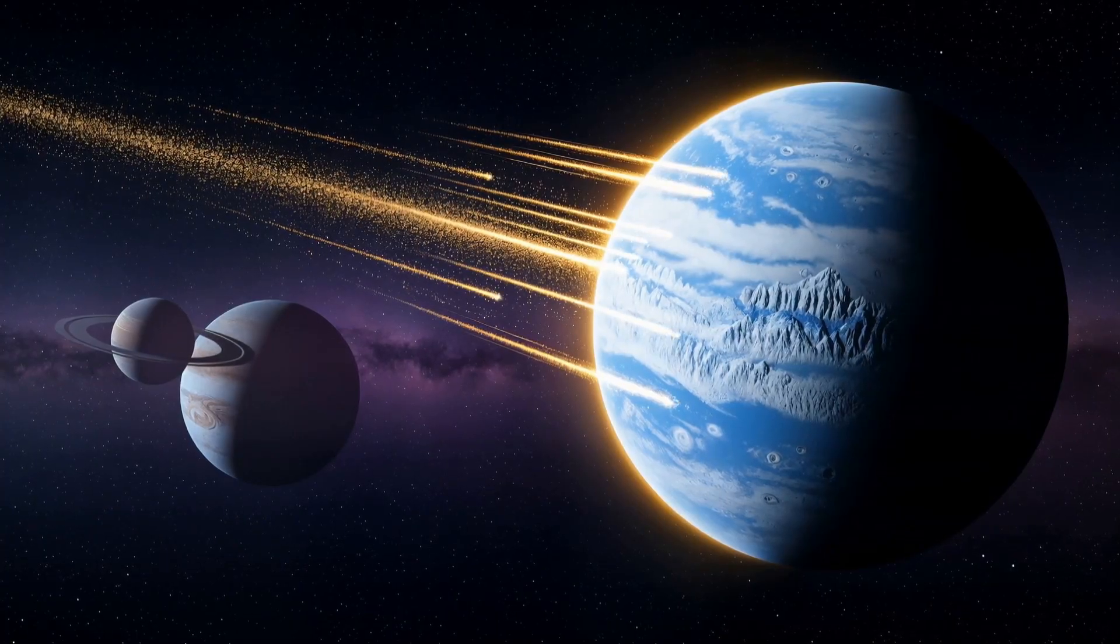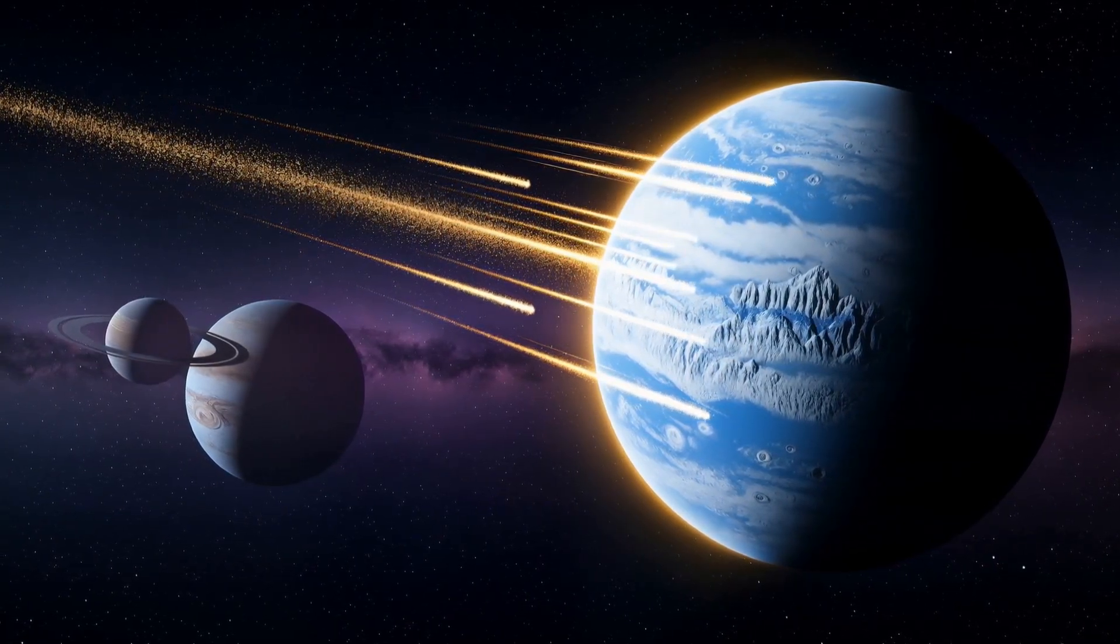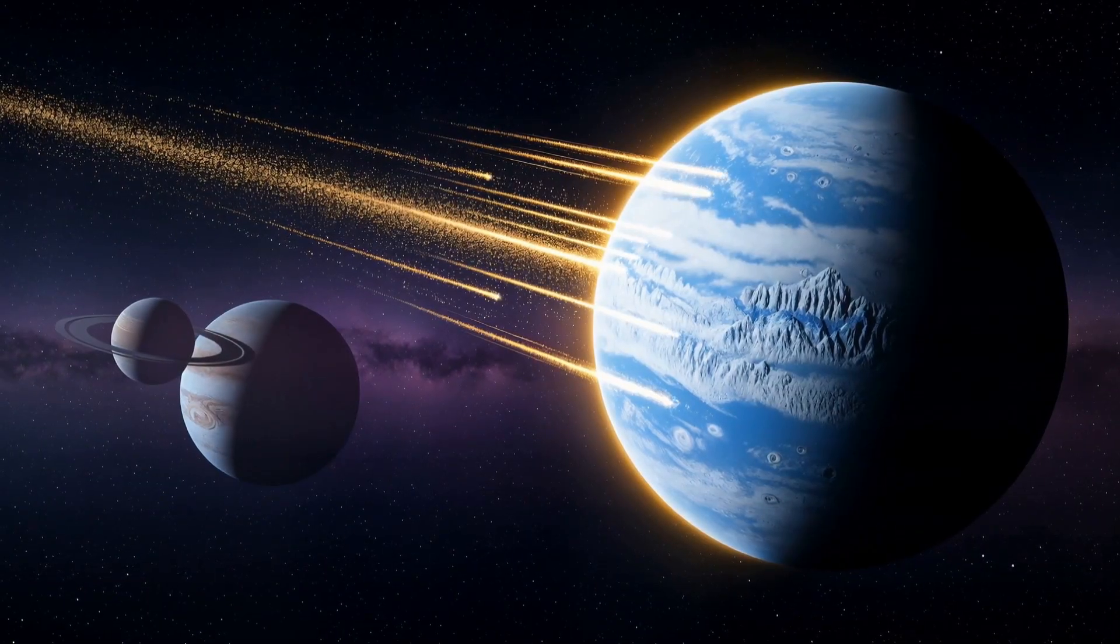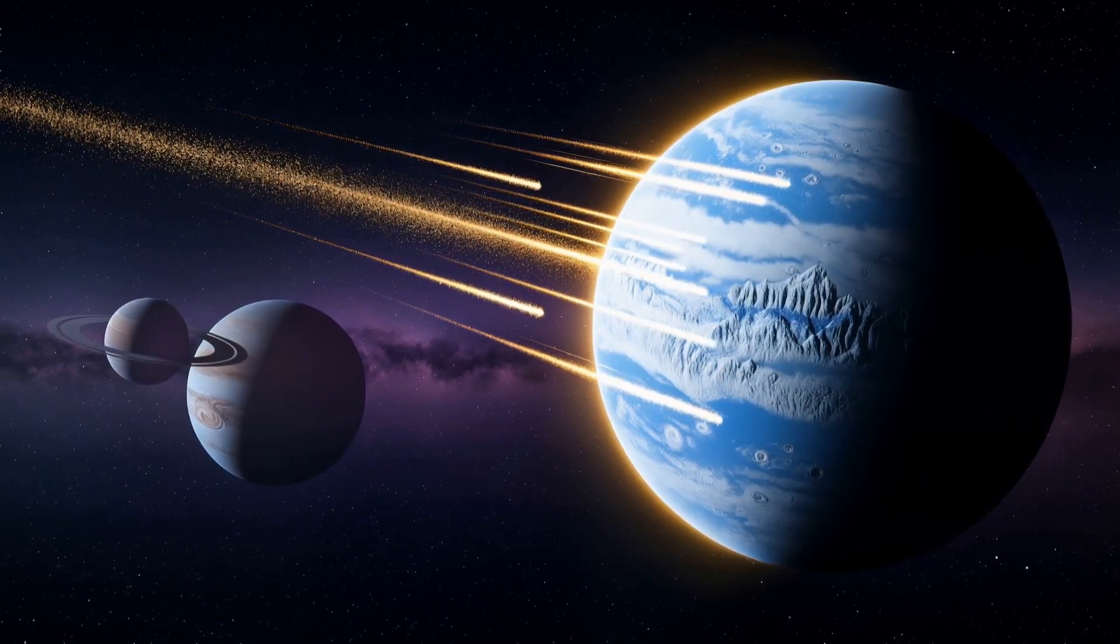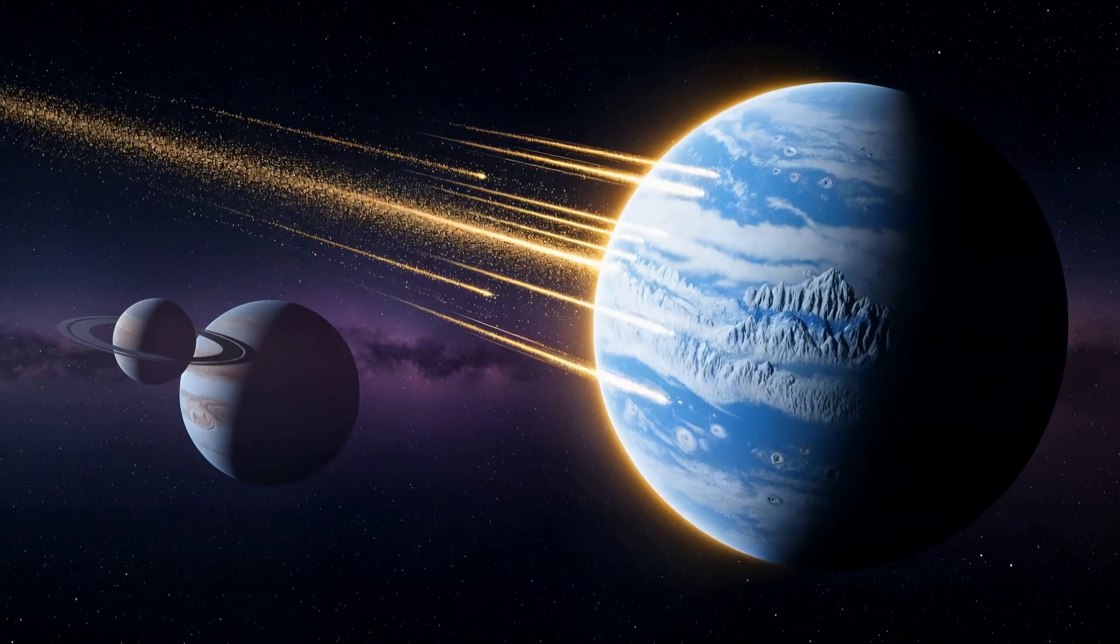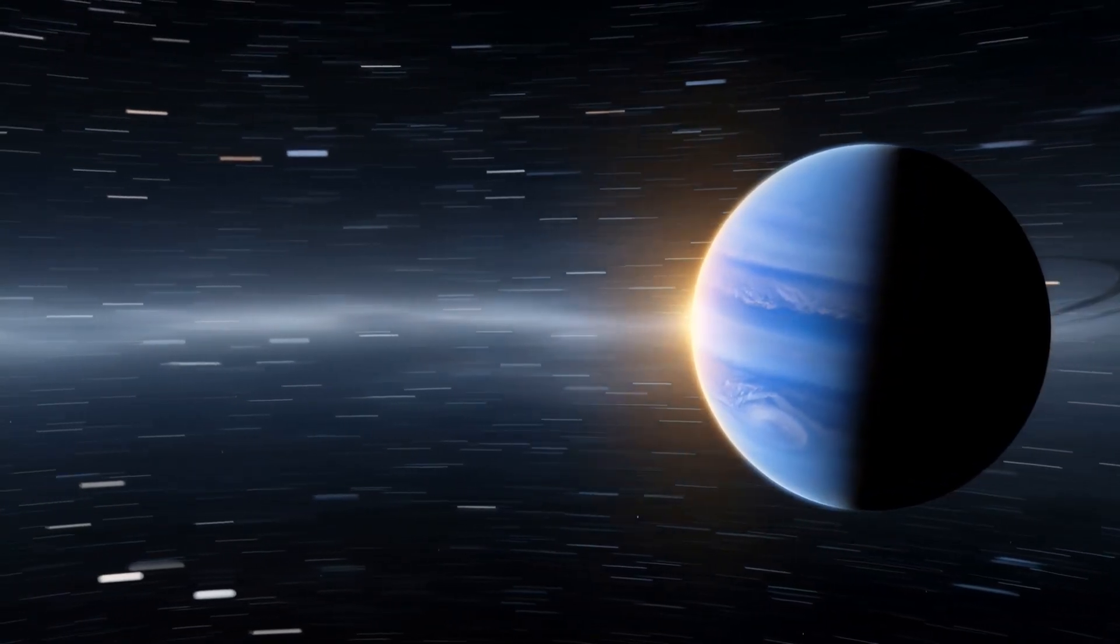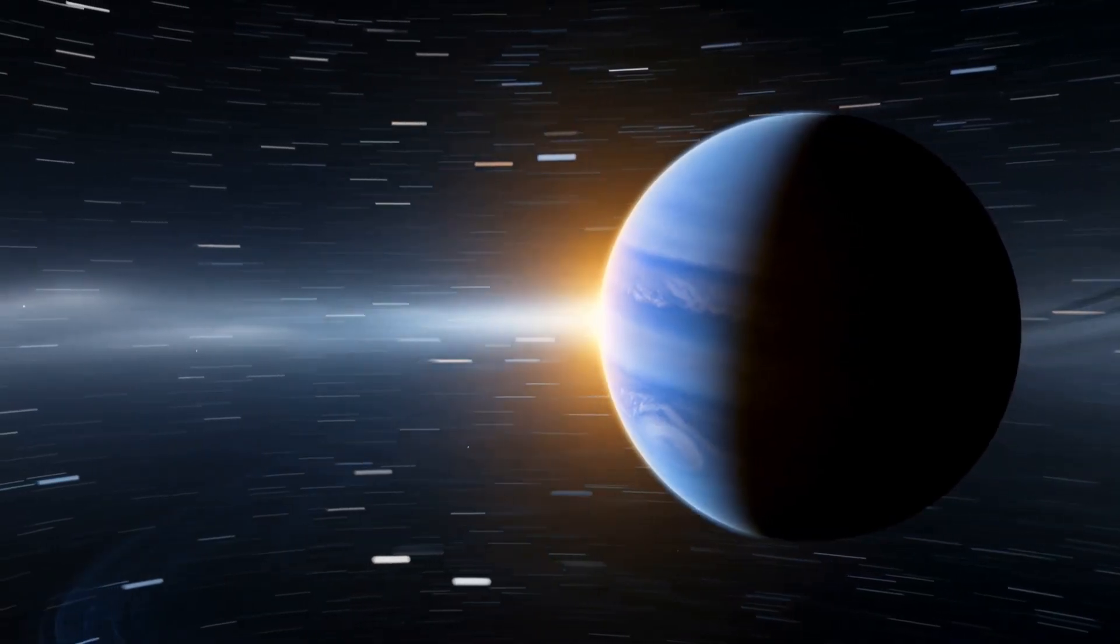The existence of Planet 9 would answer so many questions. How did it get out there? One idea is that it could be a lost fifth giant, a planetary core that formed alongside Jupiter and Saturn before being violently flung out into the darkness. Or maybe it was a rogue planet wandering through interstellar space that was captured by our Sun's gravity long ago.